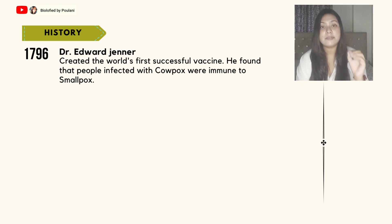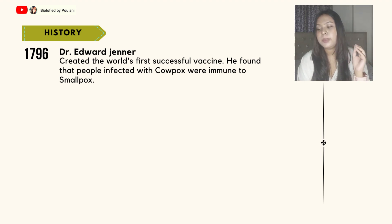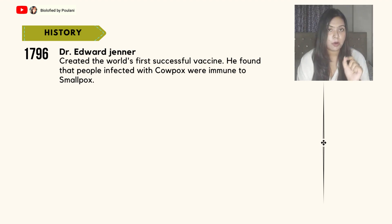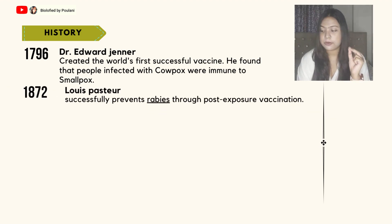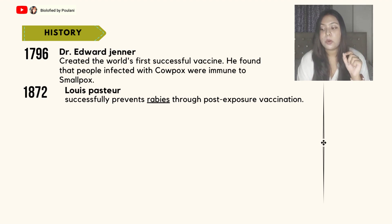In the year 1796, Dr. Edward Jenner created the world's first successful vaccine, finding that people infected with cowpox were immune to smallpox. Next, Louis Pasteur — in the year 1872, he successfully prevented rabies, another very deadly disease, through a post-exposure vaccine.